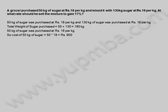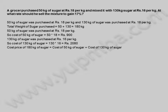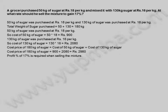Cost of 50 kilograms of sugar is equal to 50 into 18, which equals 900 rupees. 130 kilograms of sugar was purchased at 16 rupees per kilogram, so cost of 130 kilograms of sugar is equal to 130 into 16, which equals 2,080 rupees. Cost price of 180 kilograms of sugar is equal to 900 plus 2,080, which equals 2,980 rupees.